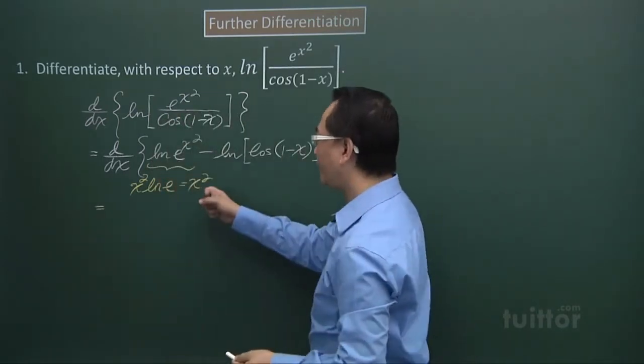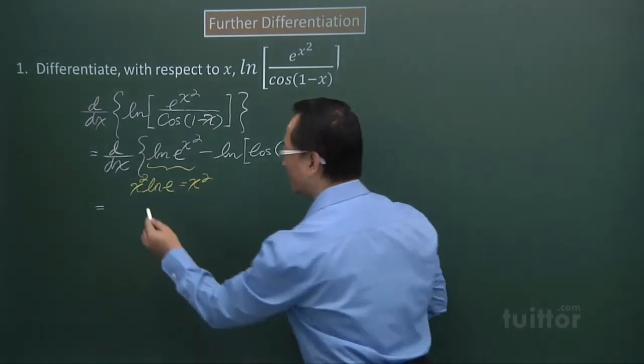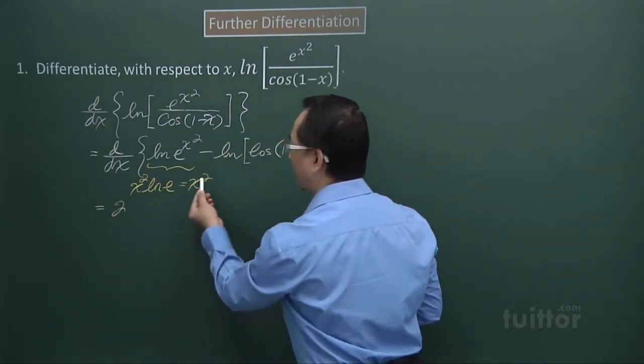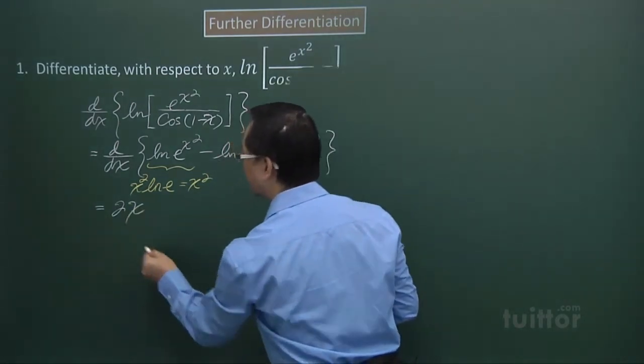So when I differentiate x squared, the index will become multiplier. So I have 2. Then the index, I take 1 off. So x to the power of 1.